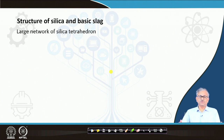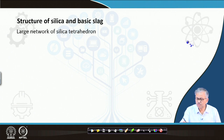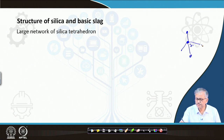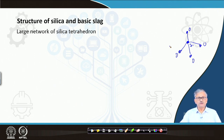Silica is a very large polymeric network of silica tetrahedra. In the silica structure, one silicon is bonded with four oxygens by covalent bonds. The oxygen atoms are at the corners and the silicon sits at the center, connected by covalent bonding, forming a tetrahedron.